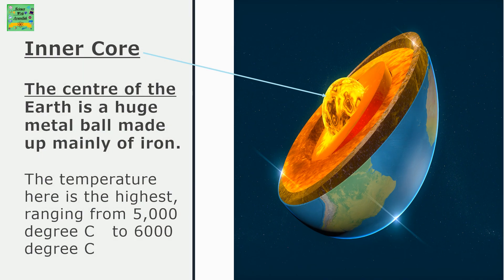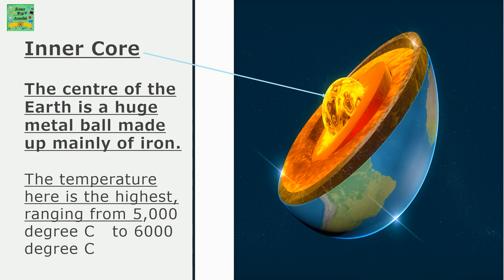Inner core. The center of the earth is a huge metal ball, made up mainly of iron. The temperature here is the highest, ranging from 5000 degrees Celsius to 6000 degrees Celsius.